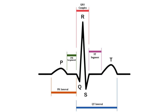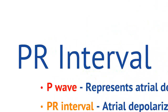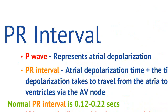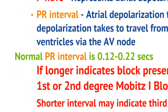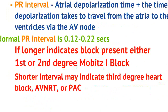The PR interval includes from the beginning of the P-wave to the beginning of the QRS complex. The P-wave represents atrial depolarization, and the PR interval represents the atrial depolarization time plus the time that the depolarization takes to travel from the atria to the ventricles via the AV node. A normal PR interval ranges from 0.12 to 0.22 seconds.